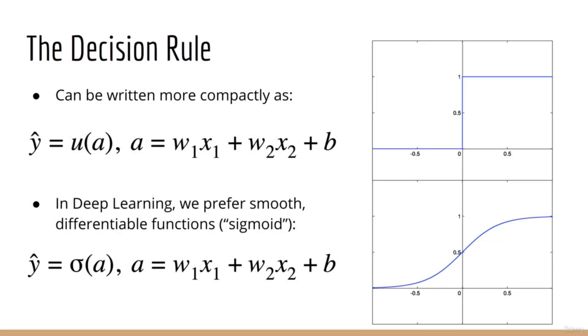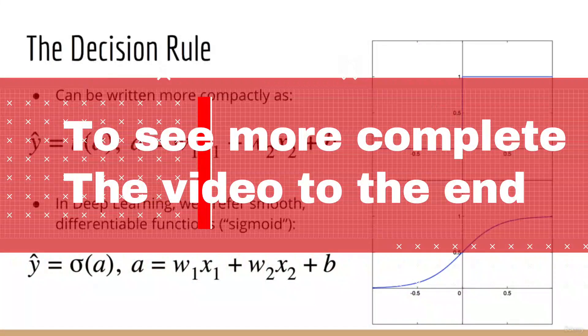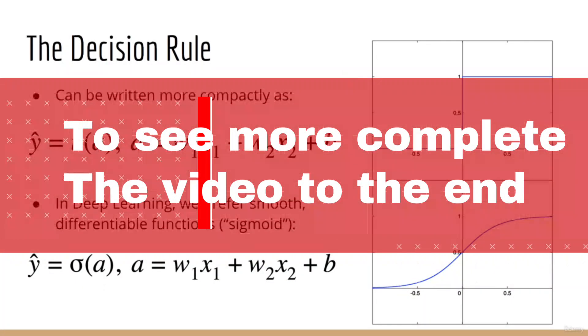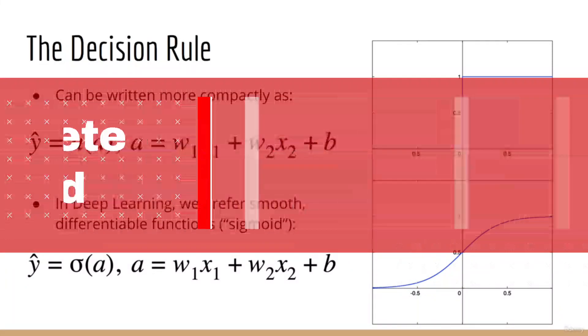Mathematically, you can encapsulate this decision rule using the step function, or if you want to be less formal, you can think of it as the picture that you see here. We call A the activation.